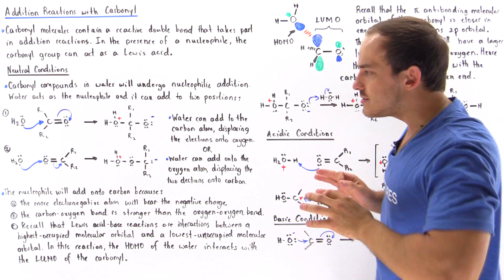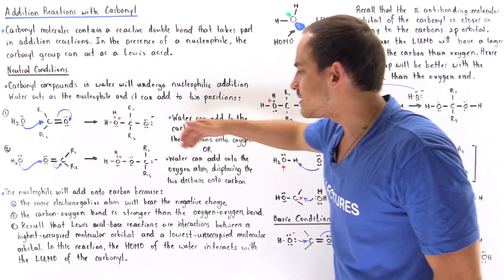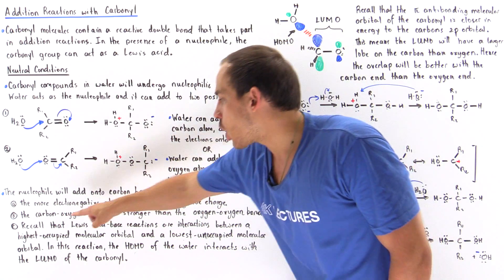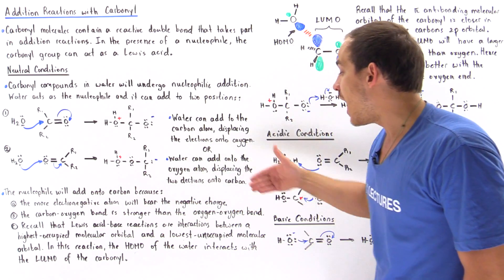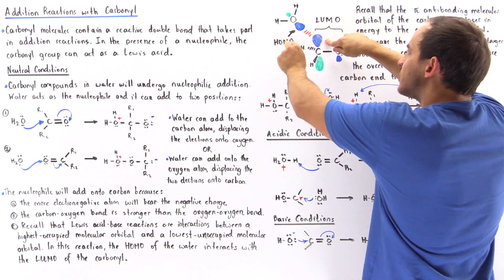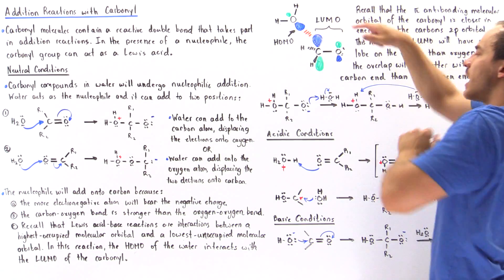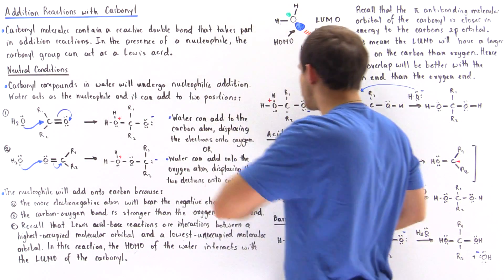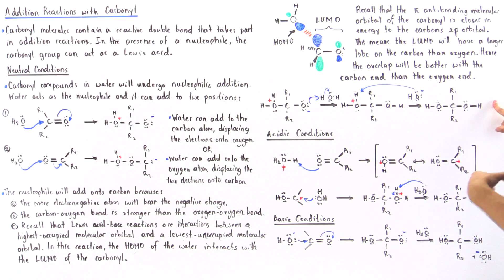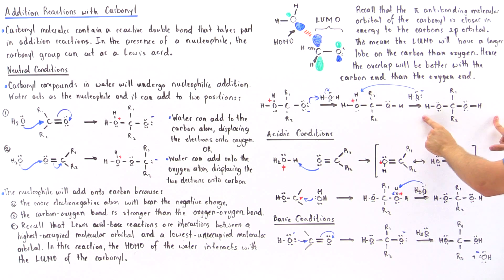So there are three reasons why pathway one is more likely than pathway two: the more electronegative atom bears the negative charge; the carbon-oxygen bond is stronger and more stable than the oxygen-oxygen bond formed in pathway two; and there is much better overlap between the HOMO of the nucleophile and the LUMO of the carbonyl group, which is the pi anti-bonding molecular orbital. Once the nucleophile adds to the carbon, the second step is protonation of the oxygen using water, and the final step is deprotonation of this oxygen using hydroxide, forming the hydrate product.